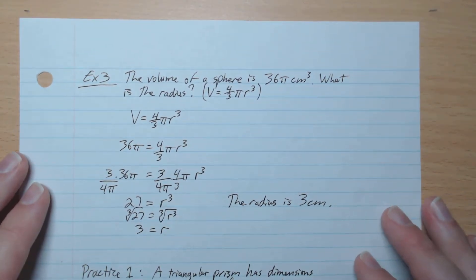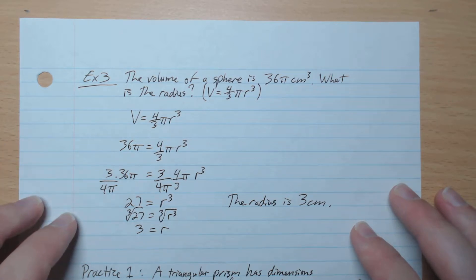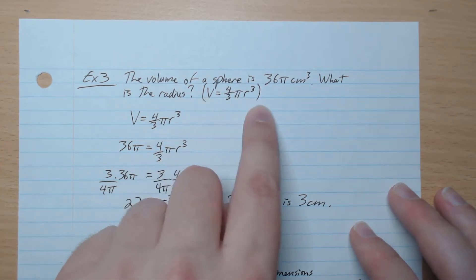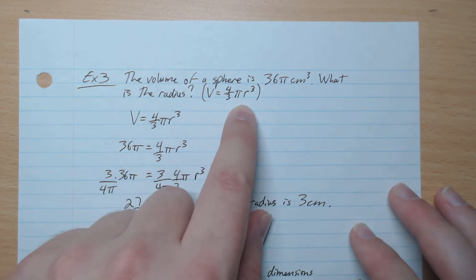Example 3. The volume of a sphere is 36π centimeters cubed. What is the radius? So the equation for volume of a sphere is given. 4 over 3 π r³,